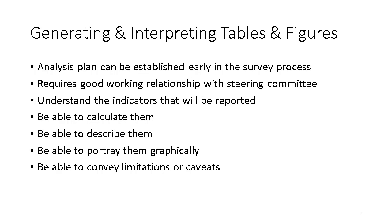The last big topic in this course is how to generate tables and figures — how to calculate the results. How do we calculate coverage? What are the World Health Organization's recommended indicators for describing vaccination coverage? How do we define the numerators and denominators? How do we calculate them? How do we describe them and use them in a sensible sentence so people understand what we're saying with these numbers? How do we show them graphically? What do we convey about the limitations or caveats that readers might need to note in the report?